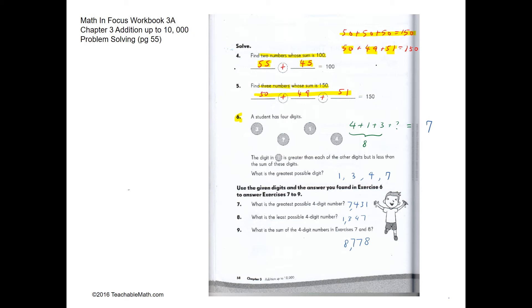Question six: a student has four digits—4, 1, 3, and... The last digit over here is greater than each of the other digits but less than the sum of these digits. The sum of 4, 1, and 3 is 8.